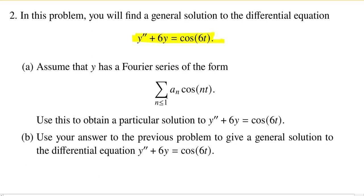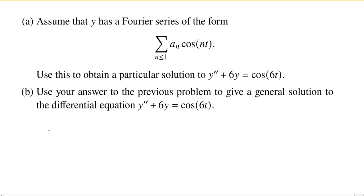All right, but we're going to just jump right into assuming that our y has that form. So I know that cos(6t), of course, that's going to be its own Fourier series, is going to equal y'' + 6y. And when we assume that y has a Fourier series of this form, now I can put this into the differential equation.